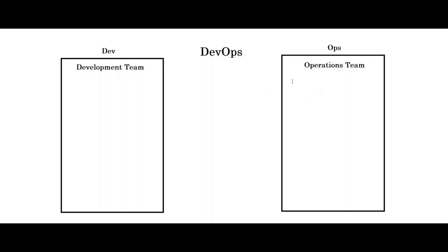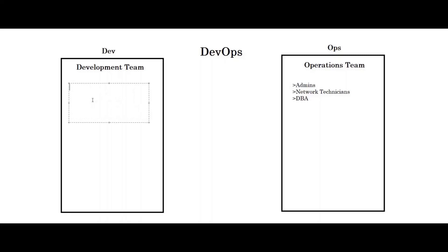Now who are the people included in the operations team? The people included in the operations team are admins, network technicians, and database administrators. And who are the people involved in the development team? Those are programmers, developers, testers, and quality assurance.